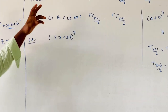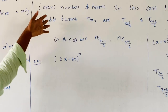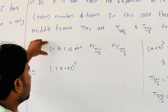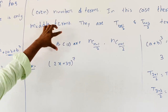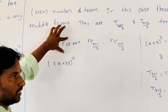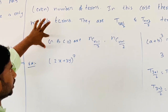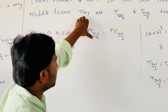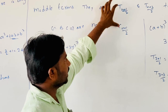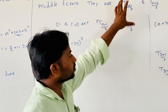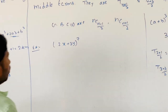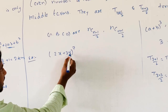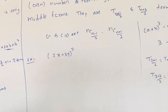Now if n is odd, what are the greatest binomial coefficients in the expansion? There are two greatest binomial coefficients: nC(n−1)/2 and nC(n+1)/2. Now find the middle terms of (2x + 3y)^7.